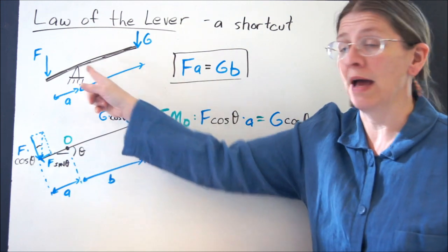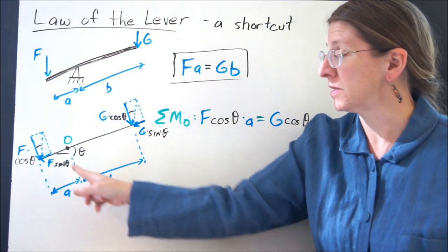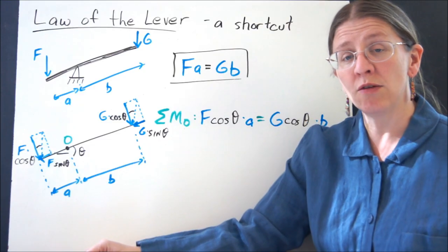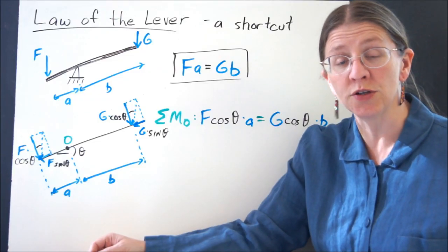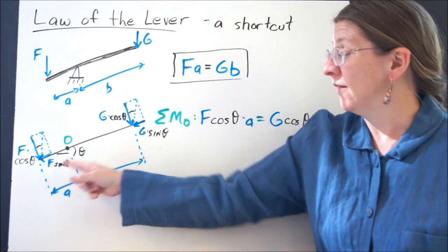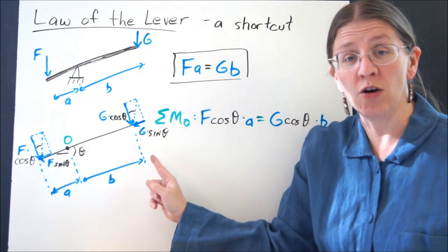I could sum the moments here at this fulcrum and see what happens. So this would be fcosθ and gcosθ were perpendicular to the actual lever. fsinθ and gsinθ are along the lever.